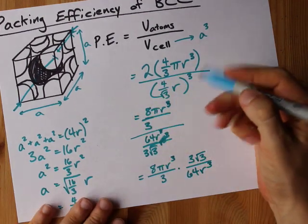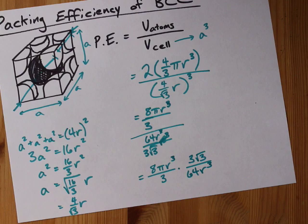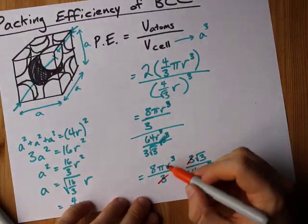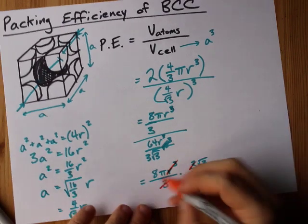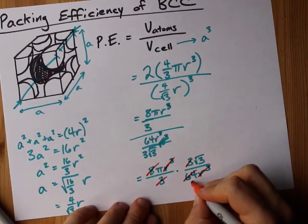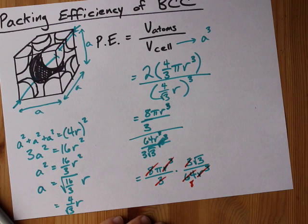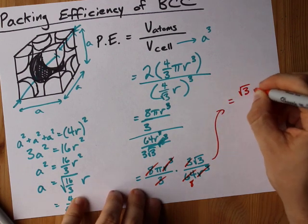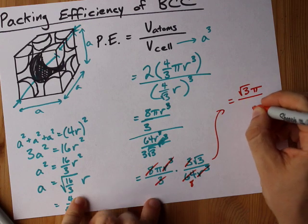And you thought you were taking chemistry, not math. This simplifies a bit. Let's see. Three cancels with three, r cubed cancels with r cubed, eight cancels a bit with sixty-four to leave eight left over. I end up with root three times pi divided by eight.